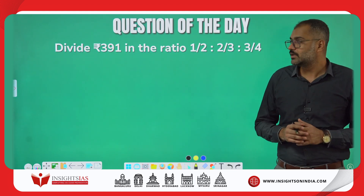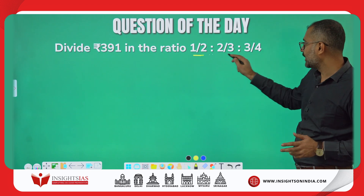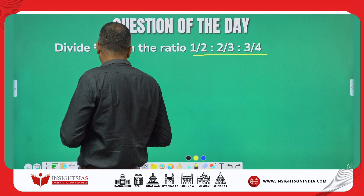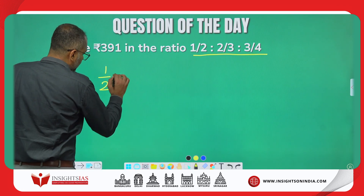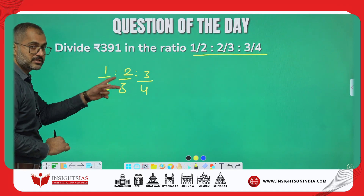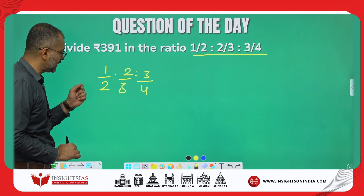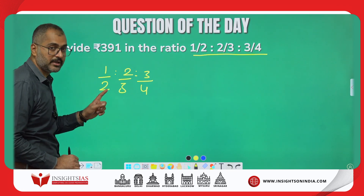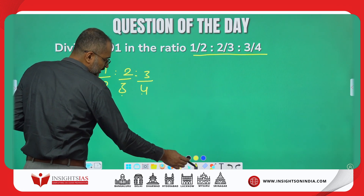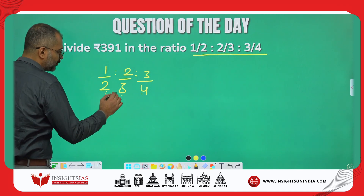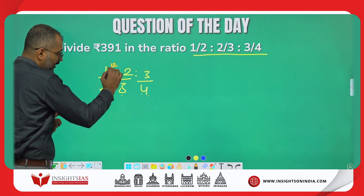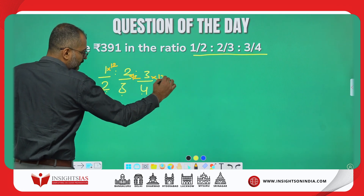This is today's new question: you have to divide rupees 391 in the ratio 1/2 : 2/3 : 3/4. This ratio is in fraction form. To convert it into integers, take a number completely divisible by 2, 3, and 4 — which is the LCM. The LCM of 2, 3, and 4 is 12. Multiply this LCM 12 by each fraction.